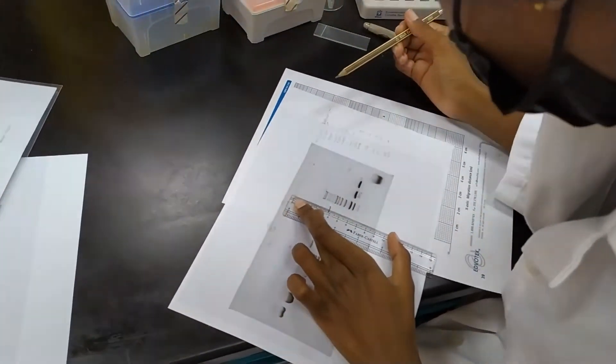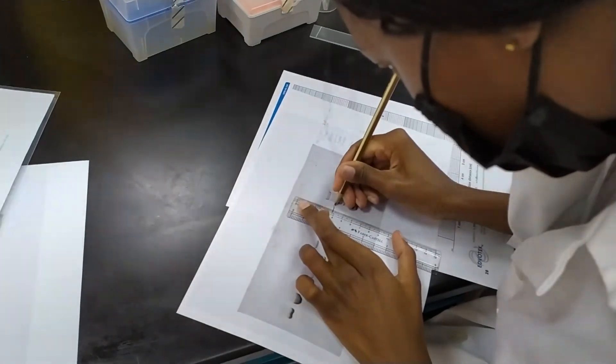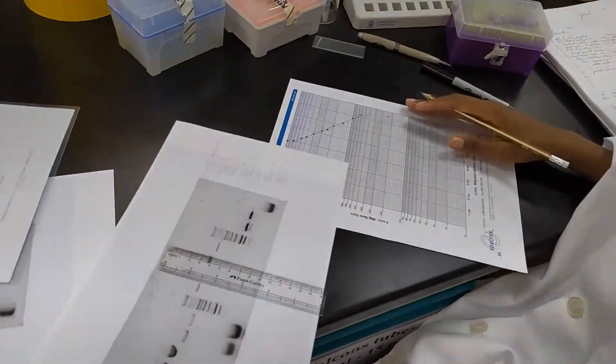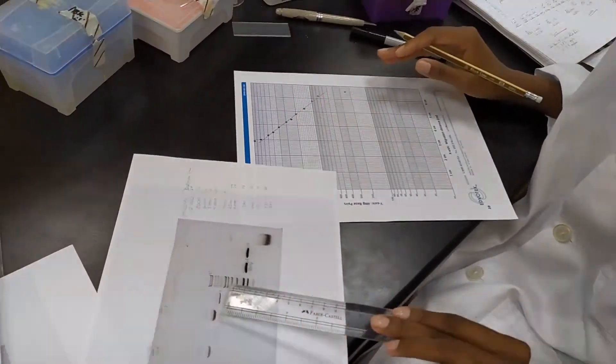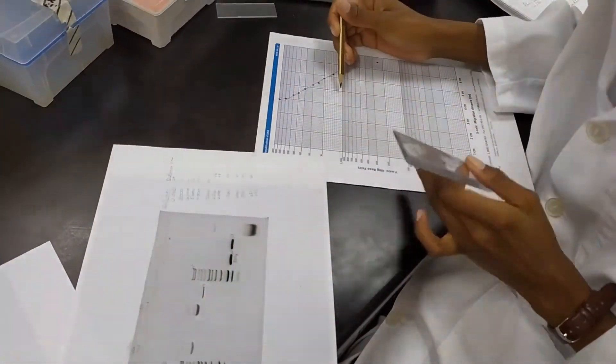In this case, Okonya is measuring the distance migrated by one of the fragments on her gel. She's then going to go to the graph and take that migration distance. And, based on the migration distance, going to go up to the line and then across to find out the size of the fragment.